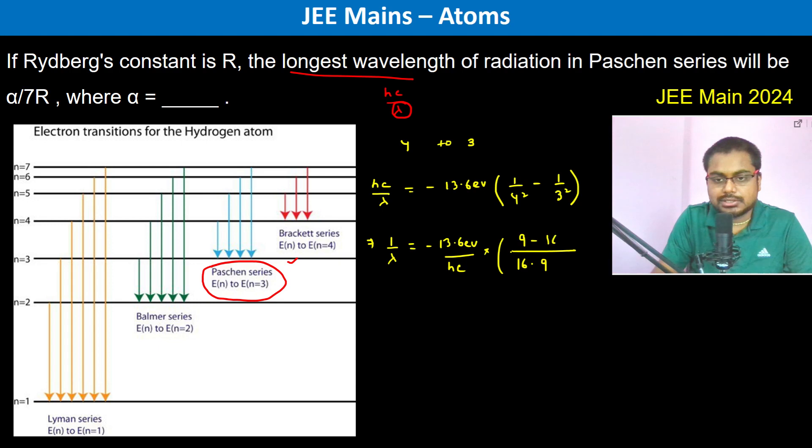This entire constant is known as the Rydberg constant, which is R. So minus R into minus 7, 16 into 9 is 144. So therefore we can see lambda is equal to